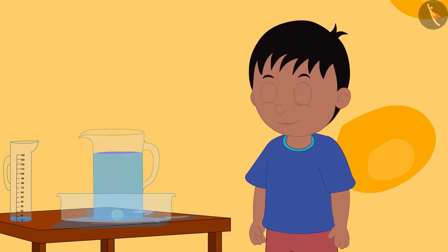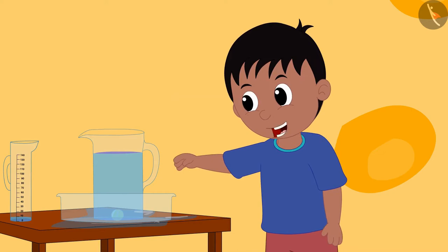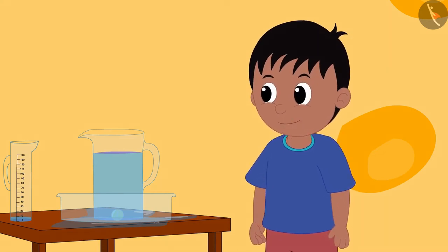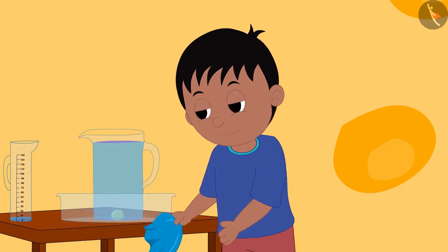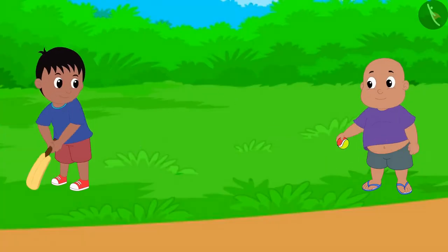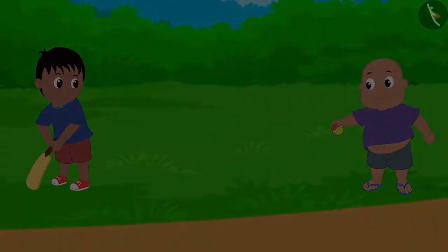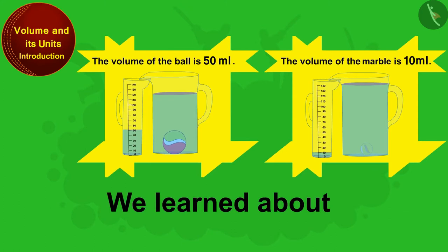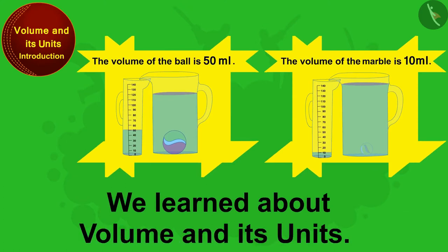Come on Bablu, my mother is going to come. I quickly wipe the water on the table and then we will go out and play cricket. Raju wiped the water on the table and the two friends went to play cricket. Children, in this video we learned about volume and its units.